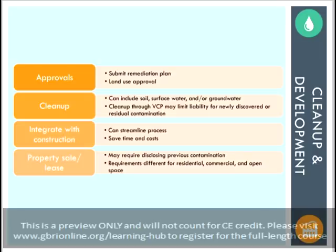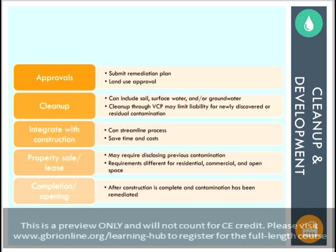As with any project, it is a good idea to market leases for the finished building from the start, or to have a prospective buyer in mind if the owner will not be the building occupant. Most types of contamination and remediation measures will need to be disclosed to prospective tenants or buyers. There are also different regulations in place for various use types. For instance, a residential zone will need to be more contaminant-free than an area that is simply set aside as open space. The project is considered complete once the construction is finished and the property is occupied.